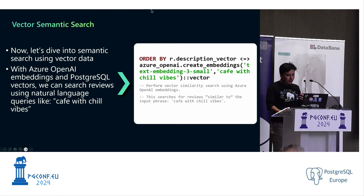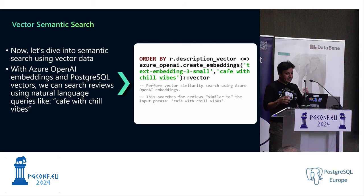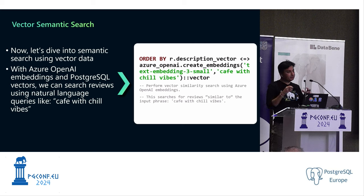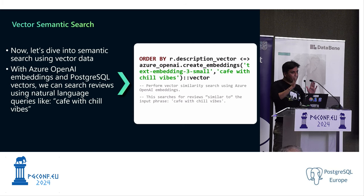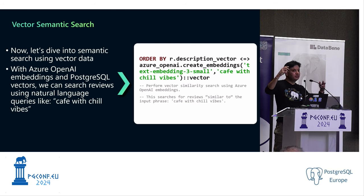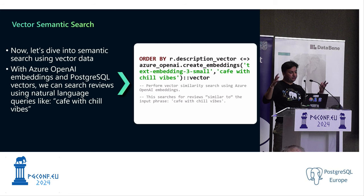Why ORDER BY and not WHERE? When you use a vector similarity search, you're trying to rank all available businesses based on how closely they relate to what you're looking for. Unlike traditional search, a vector comparison is not about filtering — it's not about reducing a million rows to two. Instead, it's about sorting results so the closest match appears on top, like a Google or Bing search, but done inside your database for your own table.